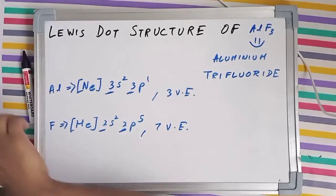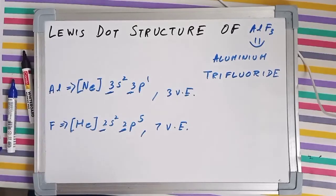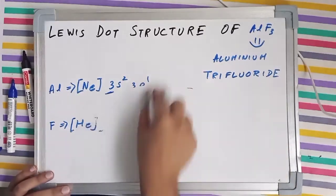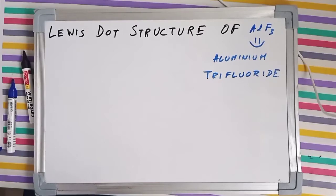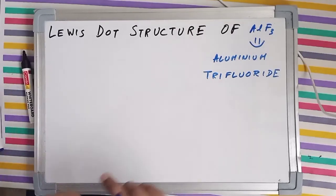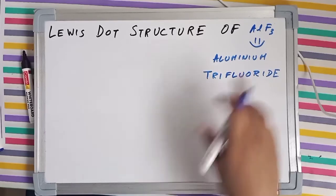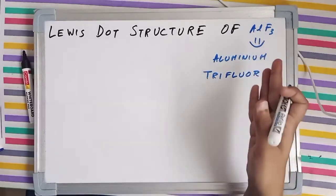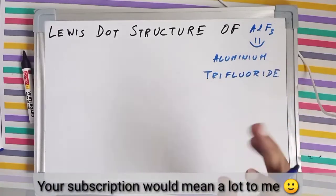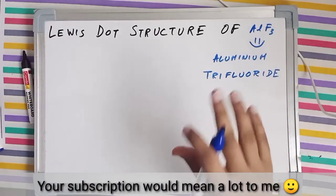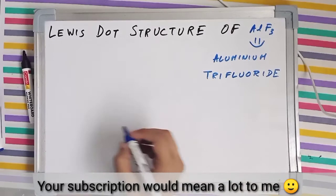Now AlF3 is an ionic compound so there will be no sharing of electrons, instead there will be transfer of electrons from aluminum to fluorine. Why from aluminum to fluorine? Because aluminum is a metal and metals have high tendency to donate electrons, whereas non-metals, and specifically fluorine, have very high electronegativity - the highest electronegative element on the periodic table.